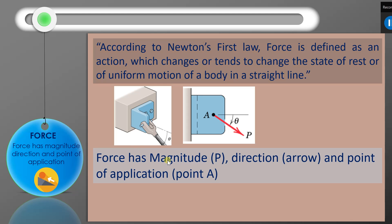A force has a magnitude P, a direction, and a point of application — here point A is the point of application. In mechanics, the main thing we need to understand is that for any force acting on a body, we must find out both the point of application and the direction of that force. Only then can we solve problems in mechanics. We will study these in detail in the next classes.